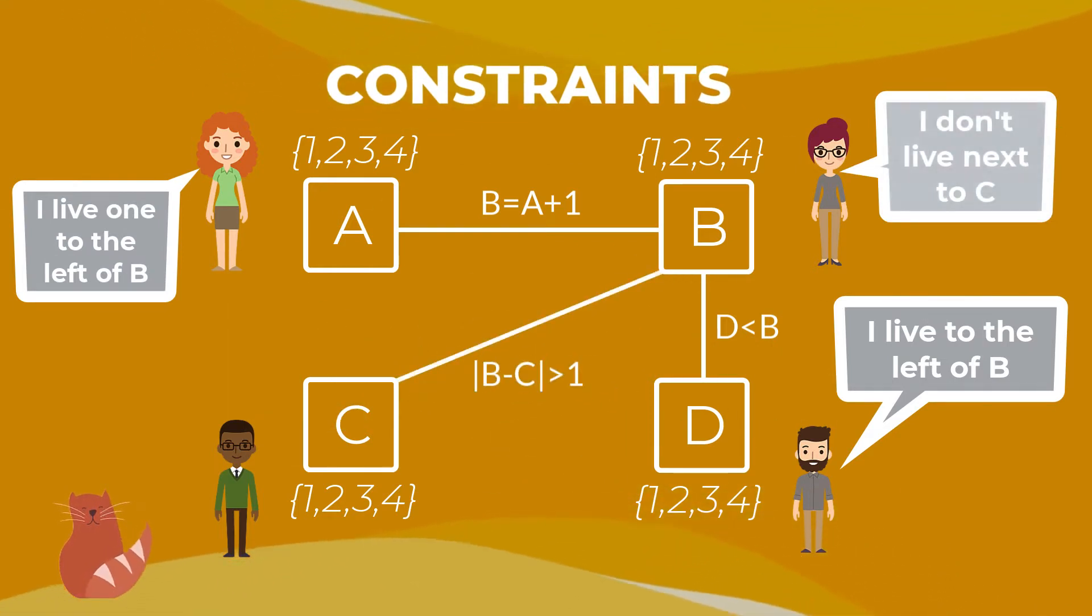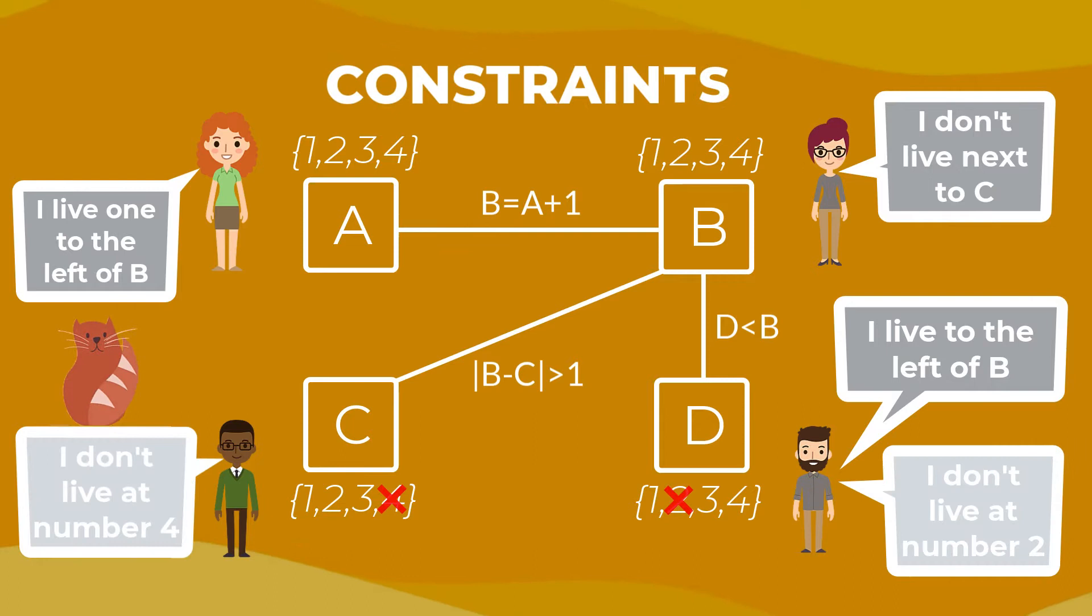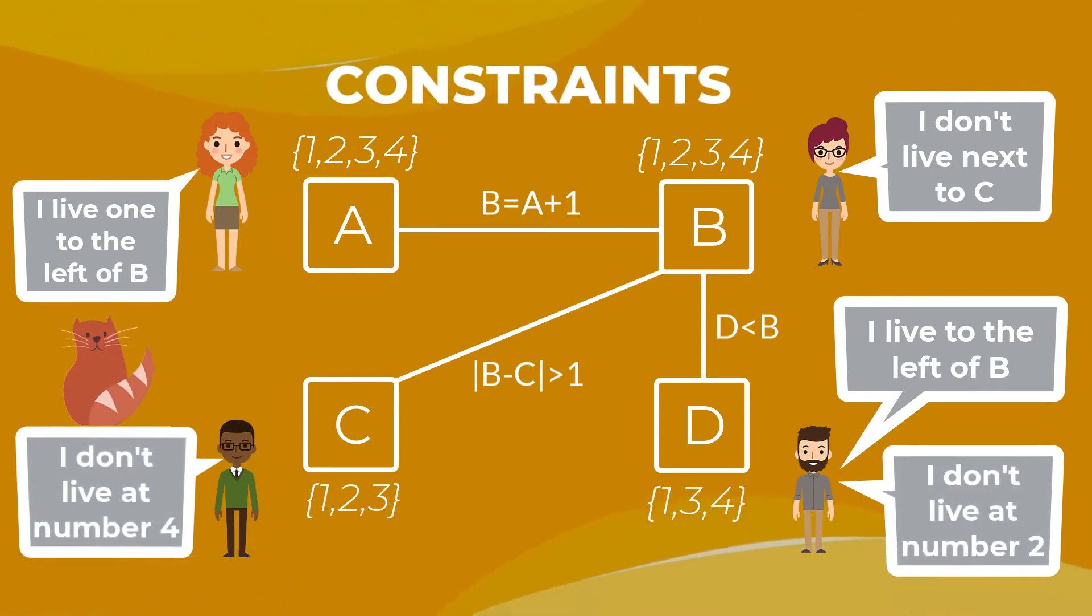For constraints on just one family, we can update the domains. What's left is to represent that no two families can live in the same house.